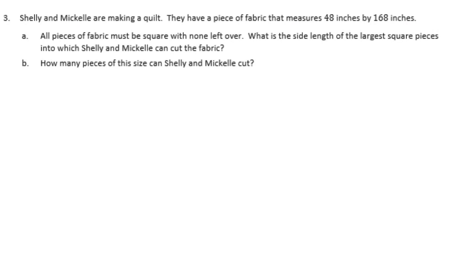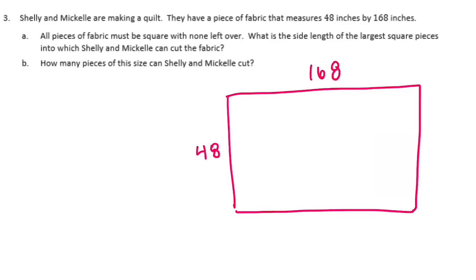Number 3. Shelly and Mikkel are making a quilt. They have a piece of fabric that measures 48 inches by 168 inches. All pieces of the fabric must be square with none left over. What's the side length of the largest square pieces into which Shelly and Mikkel can cut the fabric? So again, I'll draw my rectangle. And we have 48 by 168. And let's start by finding their greatest common factor.